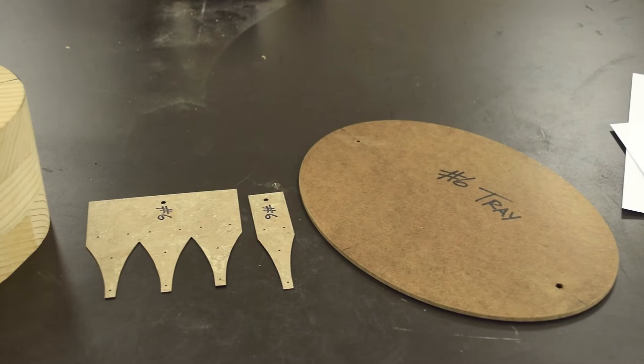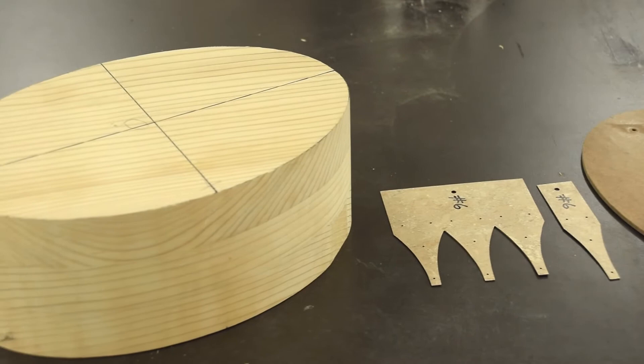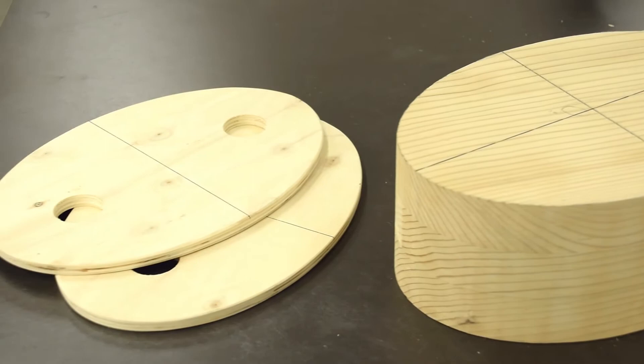We'll need a template for the number 7 oval, a number 7 swallowtail finger template, a sturdy form to bend the number 7 bands, and plywood dryers to hold the shape of the bands as they dry after bending.